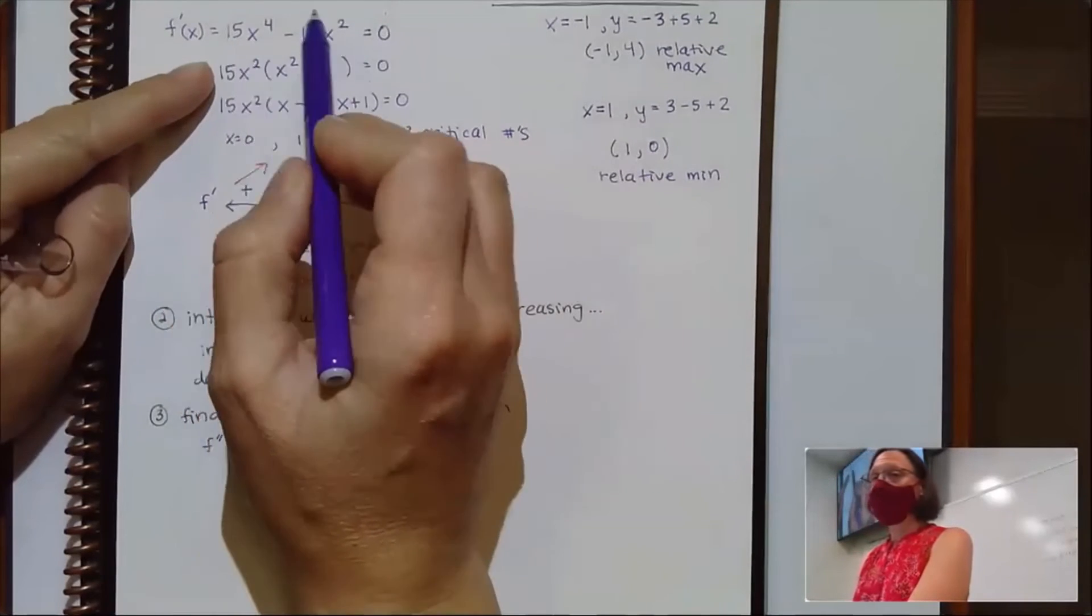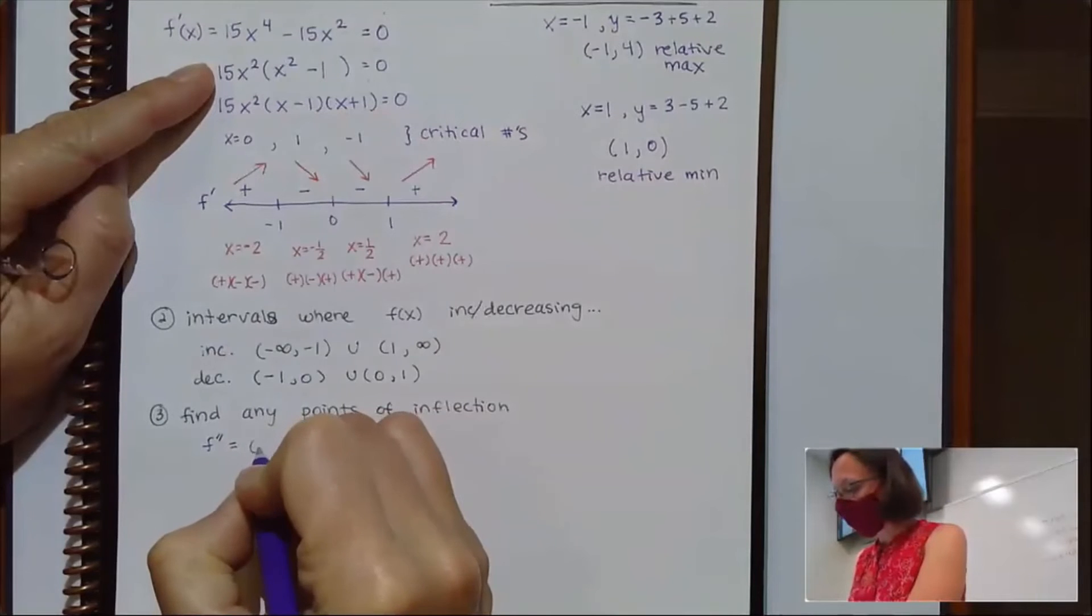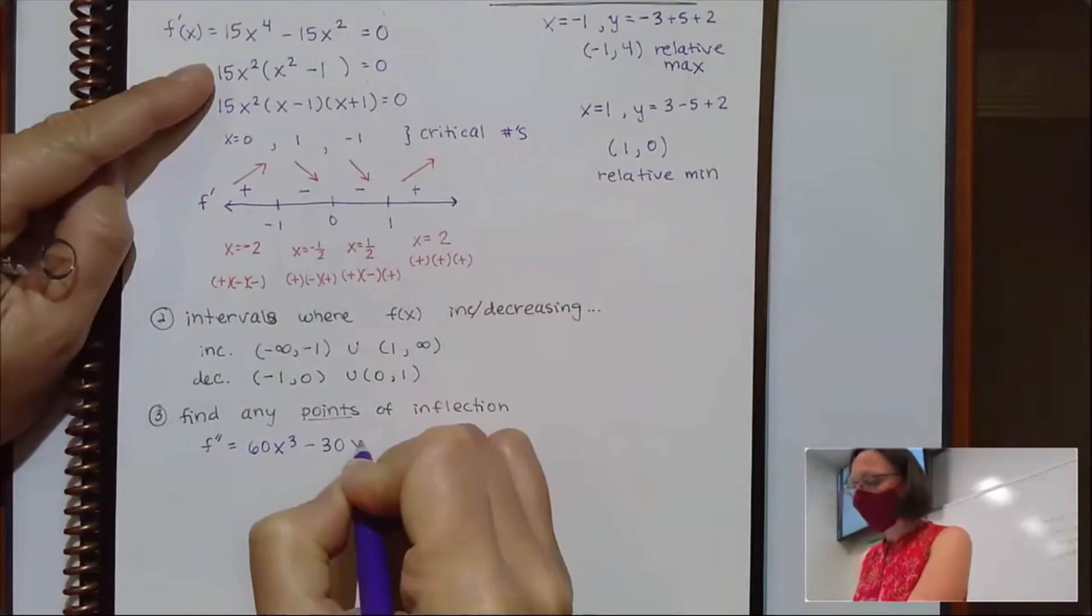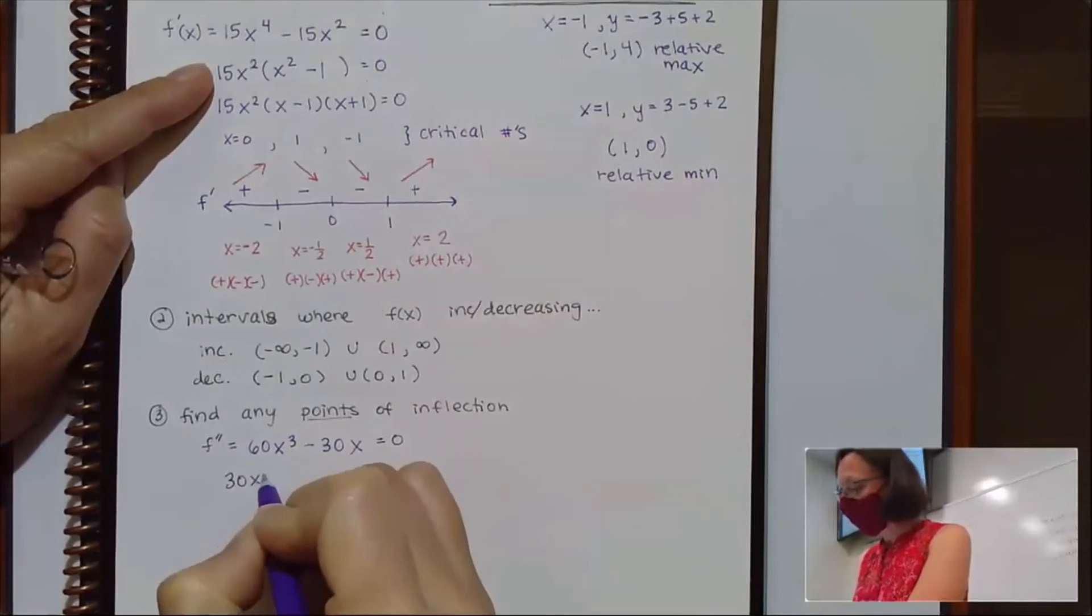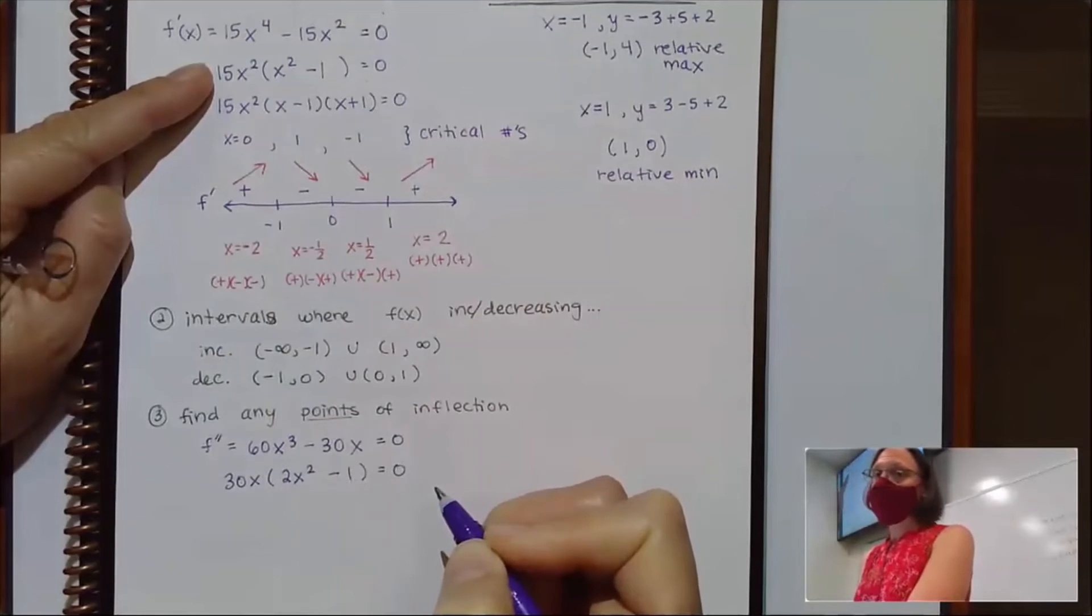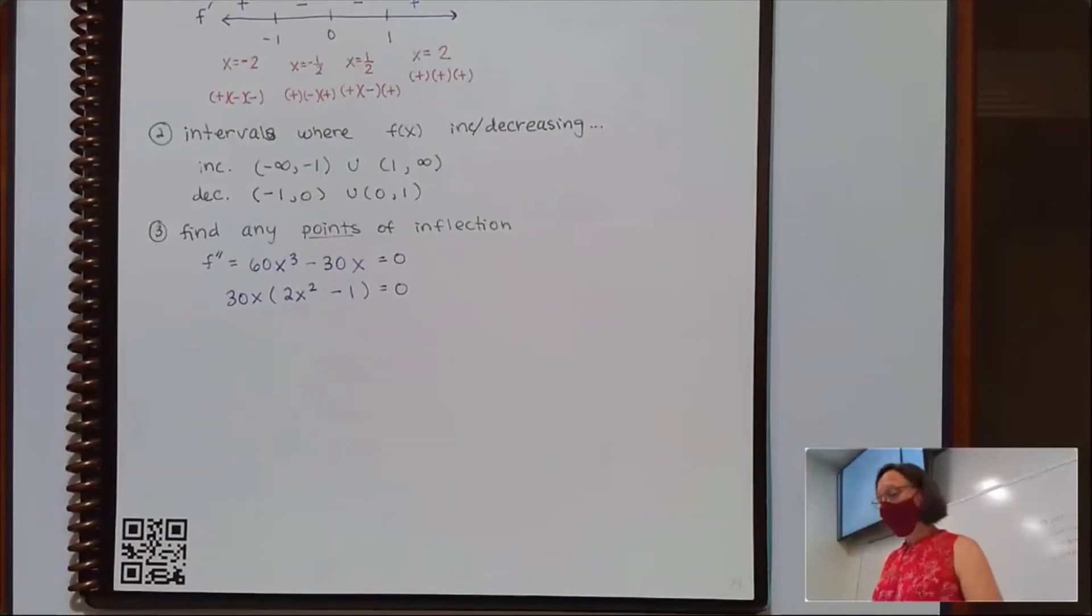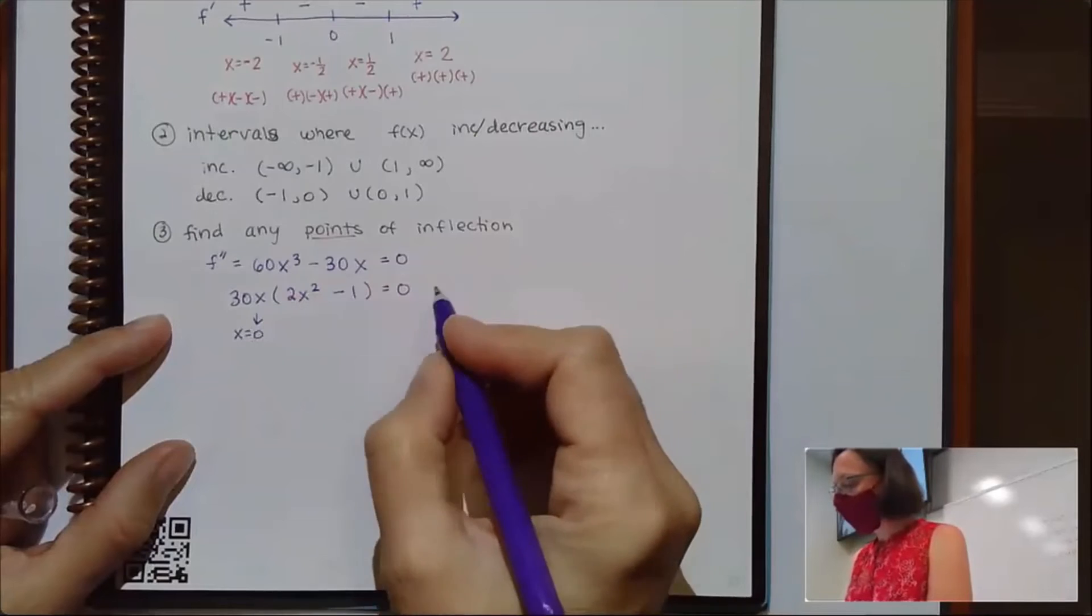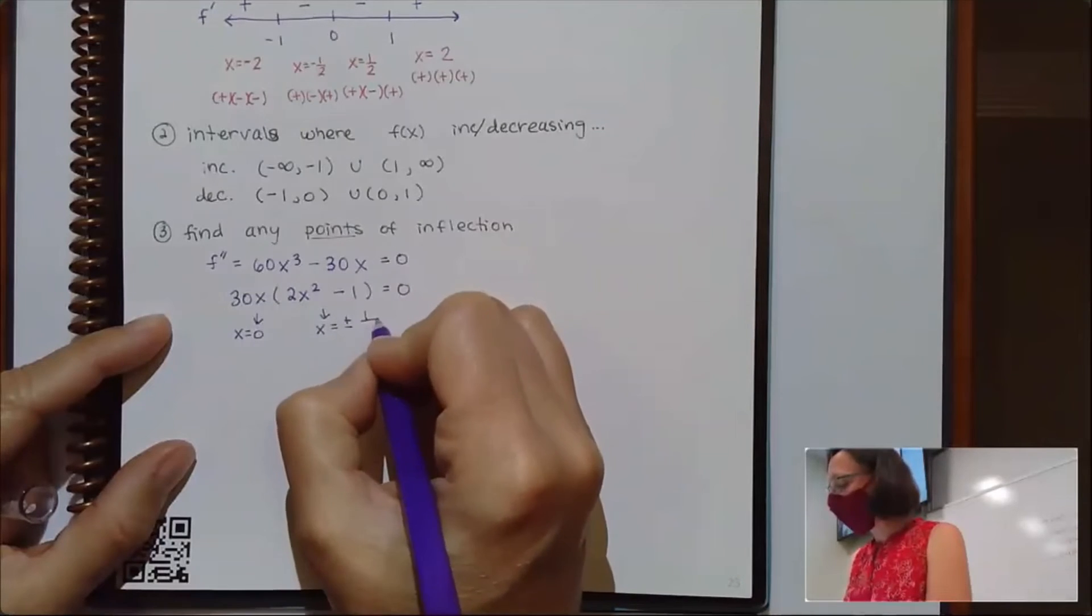But my second derivative, so I'm coming back up here to my first derivative. Let's see, 4 times 15 sounds like 60. x³. 2 times 15, that'll be a negative 30x. And if I set that equal to zero, looks like I can factor out a 30x. And then I'd be left with 2x² - 1. Well, these numbers are a little bit messier, but I've got x equals 0.